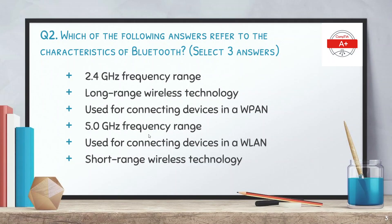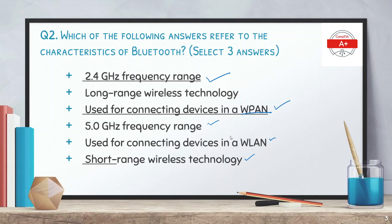Question 2: Which of the following answers refer to the characteristics of Bluetooth — select 3 answers. The options are: 2.4 GHz frequency range, long range wireless technology, used for connecting devices in a wireless personal area network, 5.0 GHz frequency range, used for connecting devices in a wireless LAN, or short range wireless technology. The correct options are: 2.4 GHz frequency range, used for connecting devices in a wireless PAN, and short range wireless technology.